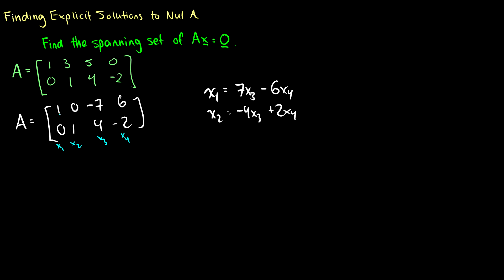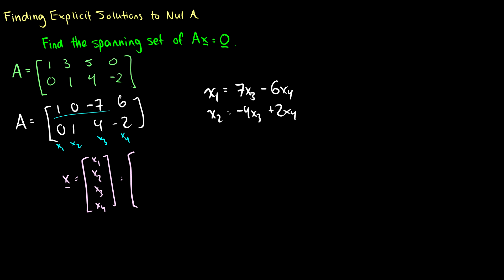From the reduced form we can write the solution: x1 = 7x3 - 6x4 and x2 = -4x3 + 2x4. The variables x3 and x4 are free. The first row is like saying x1 - 7x3 + 6x4 = 0, so we isolate x1 and x2 by moving x3 and x4 to the other side.